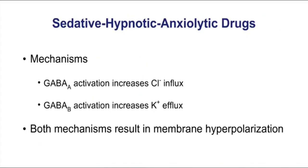Whether it's GABA-A or GABA-B, both of these types of receptors are going to have an inhibitory effect. Both result in membrane hyperpolarization. GABA-A activation increases chloride ion influx, whereas GABA-B activation is going to increase potassium efflux. Again, both actions are inhibitory.